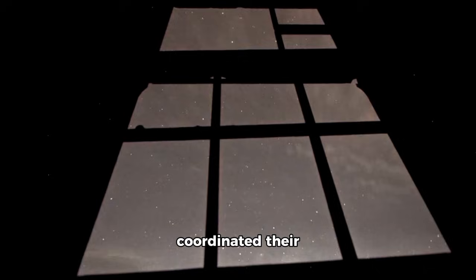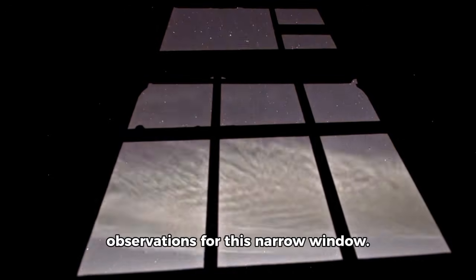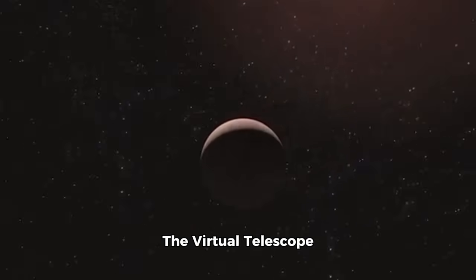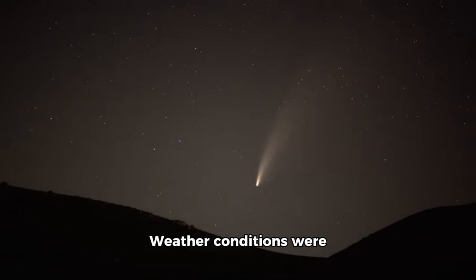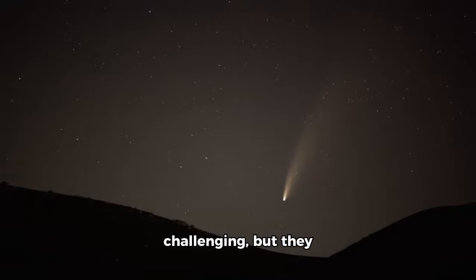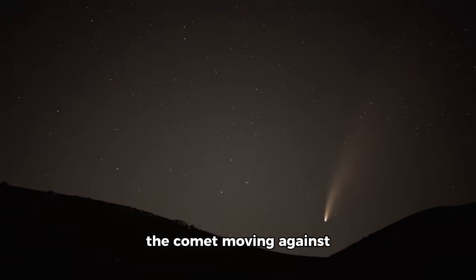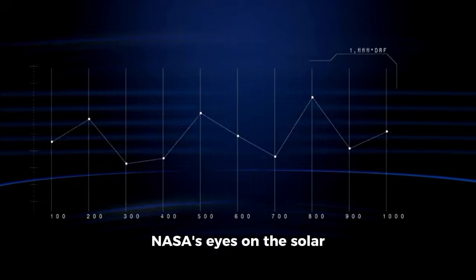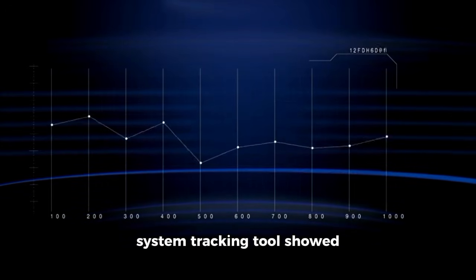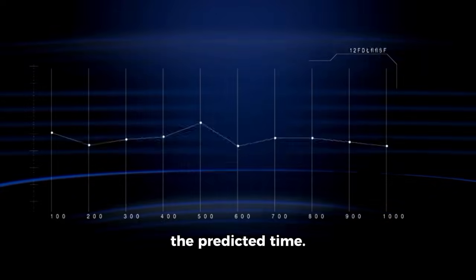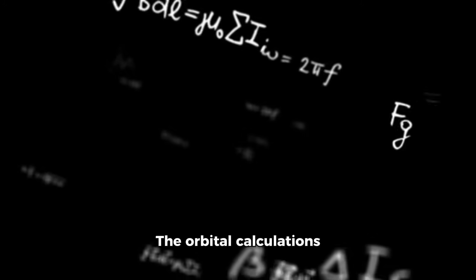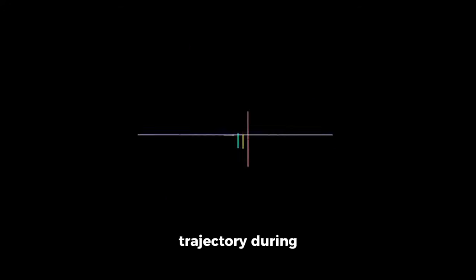Multiple observatories coordinated their observations for this narrow window. The Virtual Telescope Project in Italy hosted a live stream starting at 11 p.m. Eastern on December 18th. Weather conditions were challenging, but they still managed to capture the comet moving against the background stars. NASA's Eyes on the Solar System tracking tool showed the distance counter hitting its minimum value at exactly the predicted time. The orbital calculations held up perfectly. No surprises in the trajectory during closest approach.